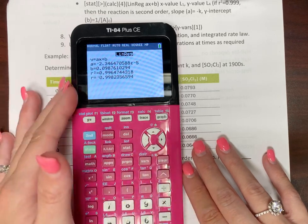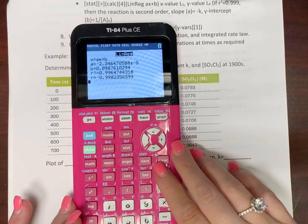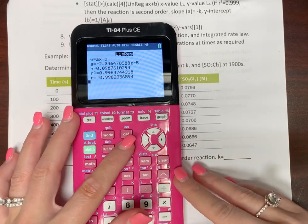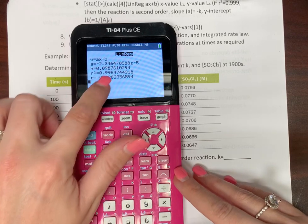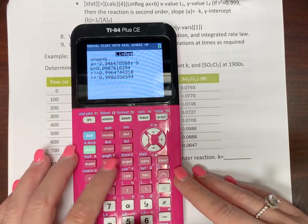Okay, so now, so that's our first order, or our zero order. Let's calculate our first order now, because we may have to come back to it. So just kind of remember 0.996.